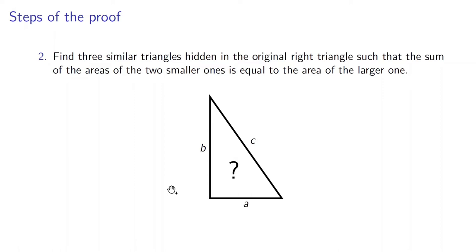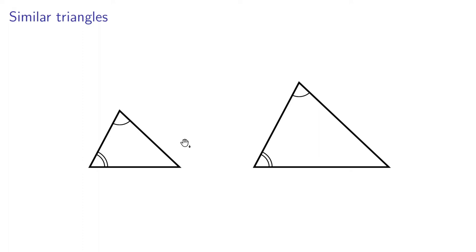First of all, it is worth remembering what similar triangles are. Similar triangles are those that have all three interior angles congruent, that is, with the same measure. In fact, since the sum of the interior angles of any triangle is always equal to 180 degrees, it is enough to verify that two of their angles are congruent, because the third angle will be as well. Another property of similar triangles is that the ratios between two corresponding linear segments are always equal — for example, the ratio of two corresponding sides or the ratio of one side and its height.